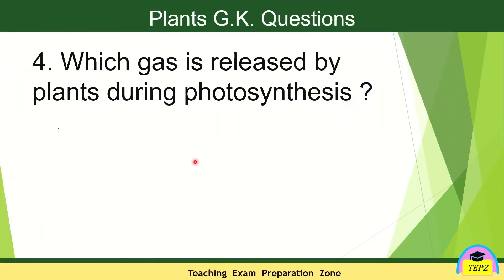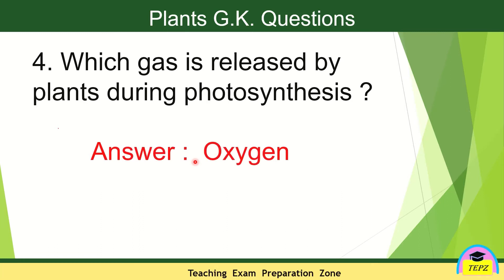Next: which gas is released by plants during photosynthesis? During photosynthesis, plants use carbon dioxide and they give out oxygen. So, oxygen is released during photosynthesis.